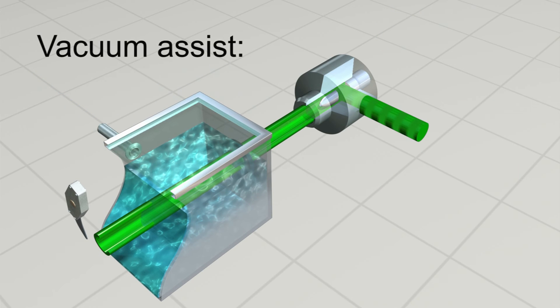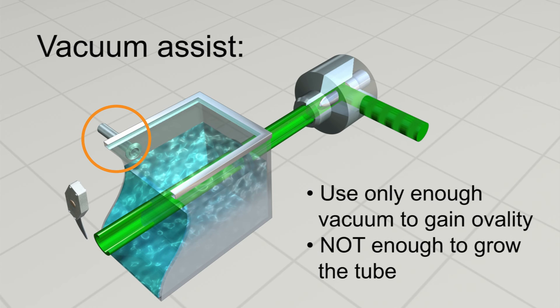With vacuum assist, use only enough vacuum to gain ovality, and not enough to grow the tube.